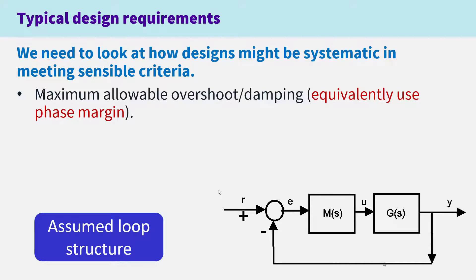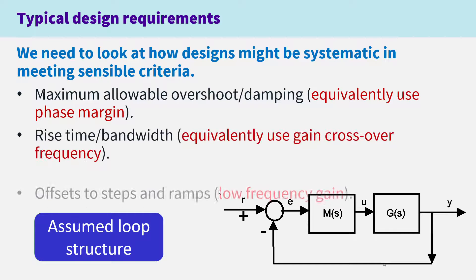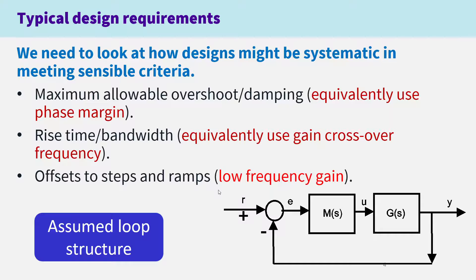Typical design requirements: we need to look at how designs might be systematic in meeting sensible criteria. The criteria we're going to use are the phase margin, which is equivalent to overshoot or damping criteria; the gain crossover frequency, which is equivalent to rise time or bandwidth criteria; and low frequency gain, which deals with offset to steps and/or ramps.